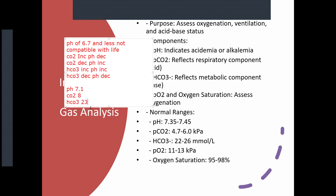If the bicarb remains at 23, it's uncompensated because the body hasn't yet responded. If the bicarb drops to 18, the body is starting to respond — that's a compensated respiratory acidosis. Now if CO2 is within normal range but bicarb is low, the respiratory component isn't the issue — it's a metabolic acidosis, also uncompensated.